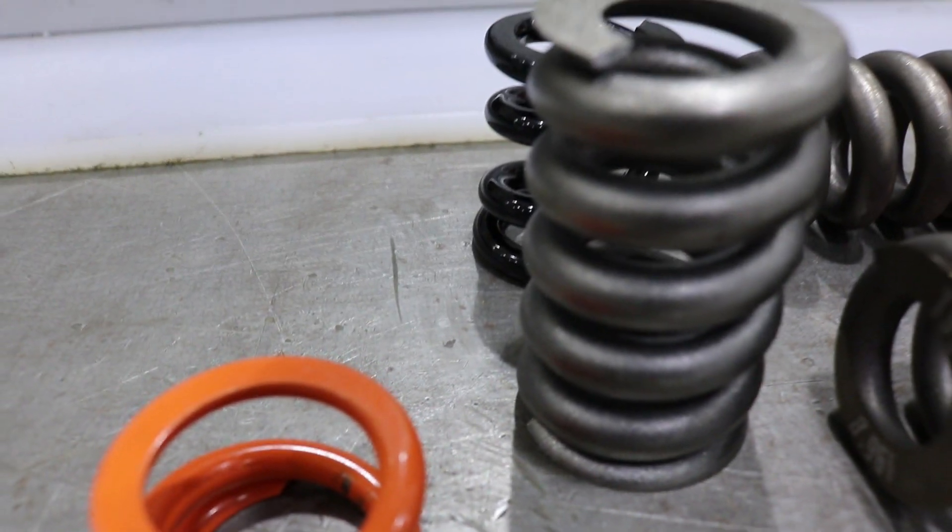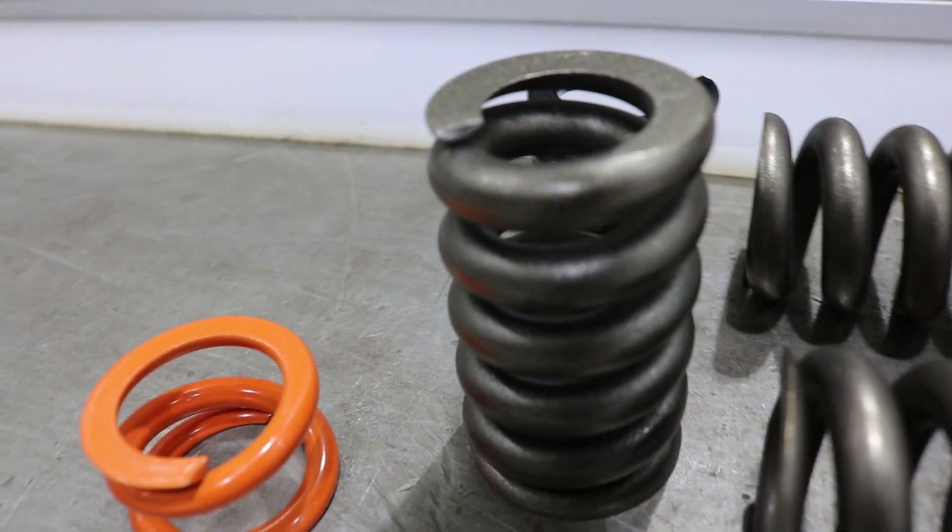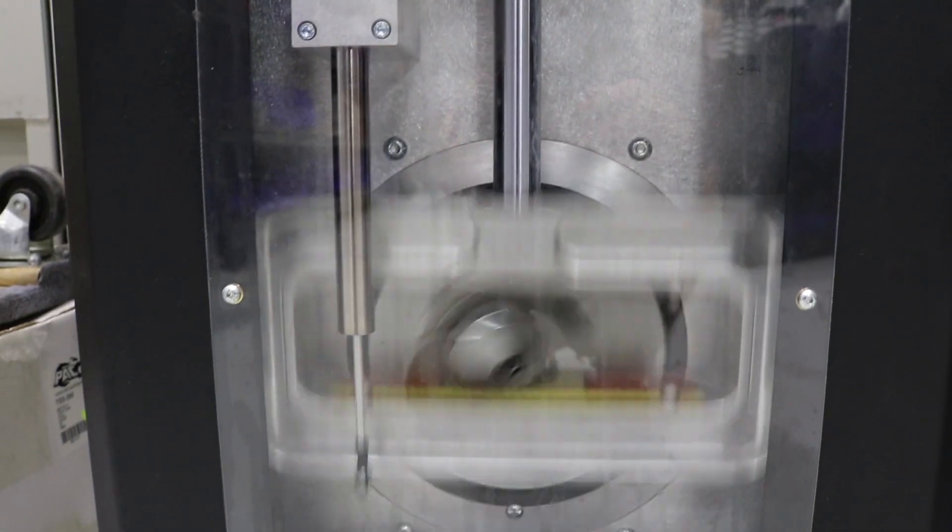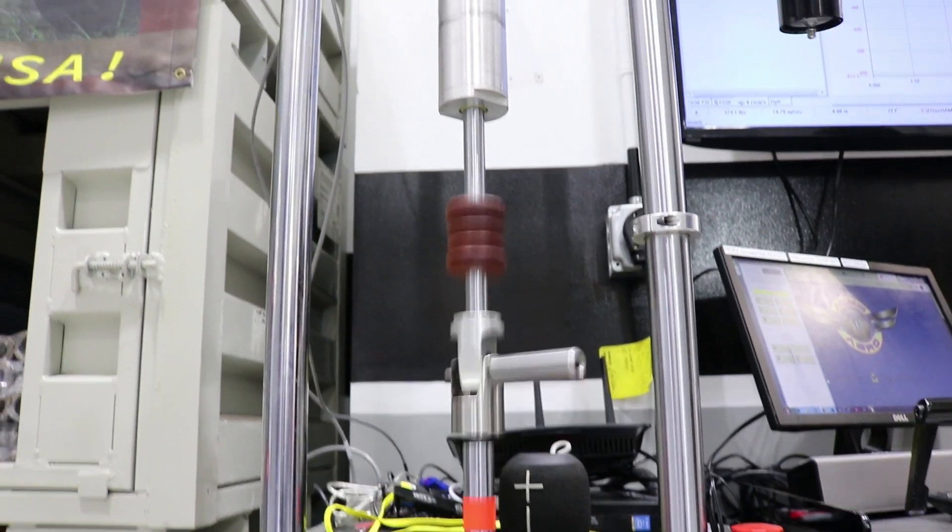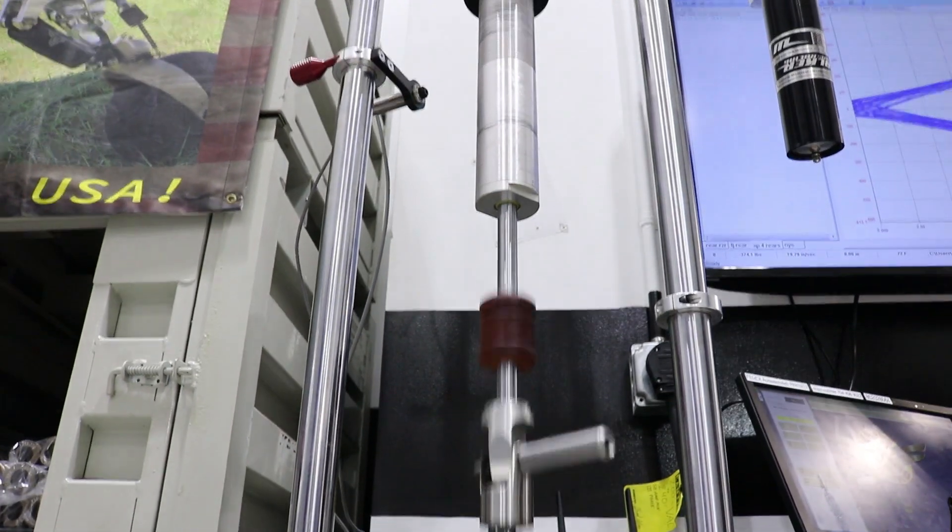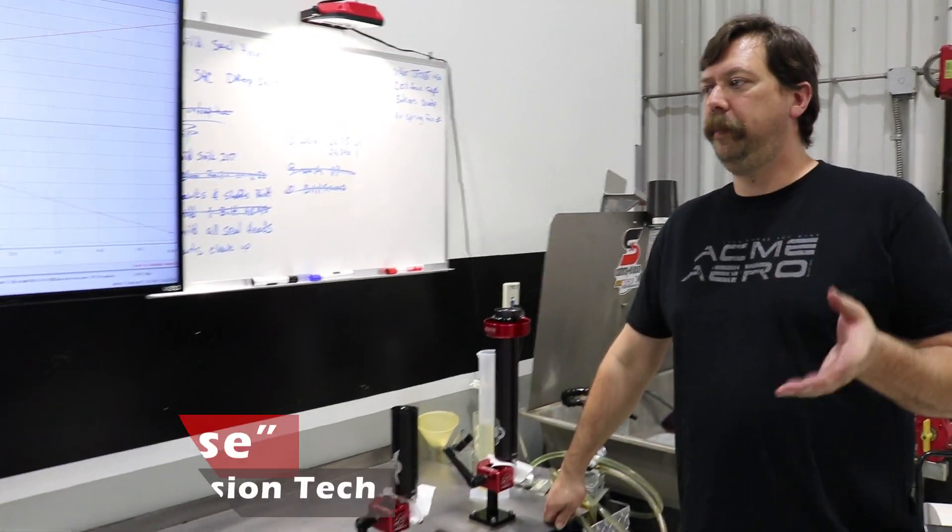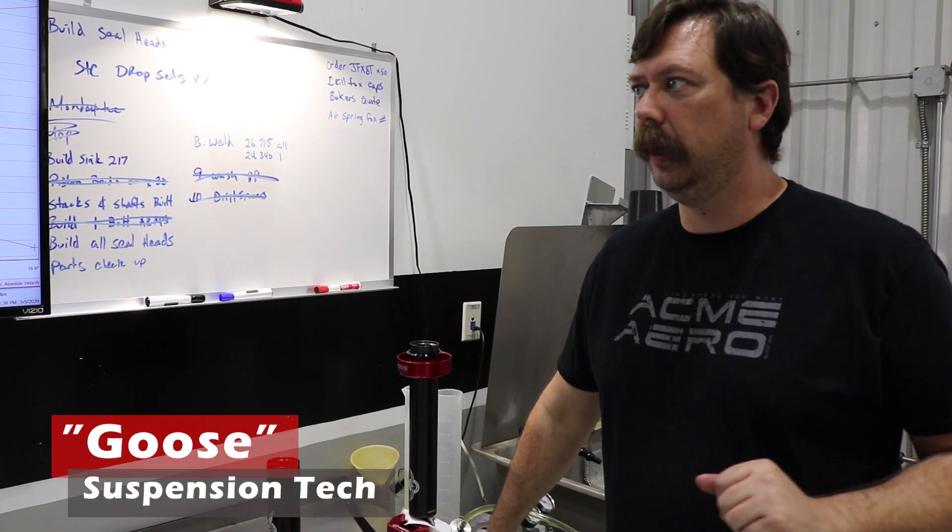Down here we've got a couple other springs that go in our Pro series shocks as well as a spring that goes in our Stinger tailwheel. This is probably the biggest question we get: what's inside this thing? Why is it so awesome? And we're going to show you.